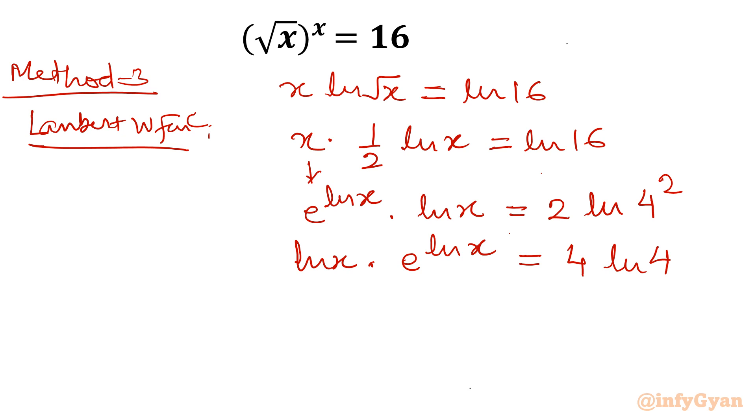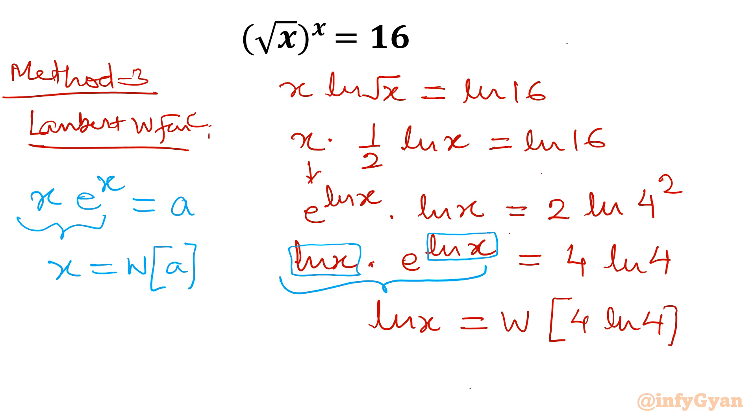Now I can easily see left hand side we have x here, whatever it is function here and same thing there. So a standard Lambert form: x times e raised to the power x should be, if it is equal to a, then we can write Lambert W. So what if we can write in the given equation ln x must be equal to Lambert W function of 4 ln 4.